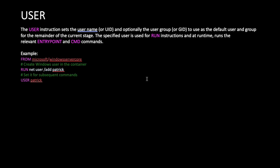The USER instruction sets the username or UID and optionally the user group or GID to use as the default user for the remainder of the current build stage. The specified user is used for RUN instructions and at runtime runs the relevant ENTRYPOINT and CMD commands. By default, if USER is not mentioned, commands run as root. For example, using Microsoft Windows Server Core as base image, you add user 'patrick' with net user addpatrick, set it for subsequent commands, and then the rest of the commands execute as the patrick user.